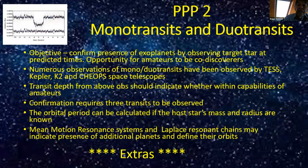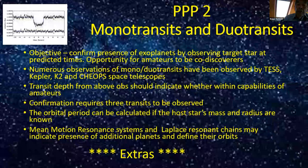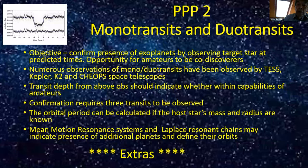Monotransits and duotransits are so named because only one or two transits of a particular exoplanet have been observed by space telescope or ground-based telescopes. But confirmation of the existence of a planet requires observation of three transits — so there's work for us there.